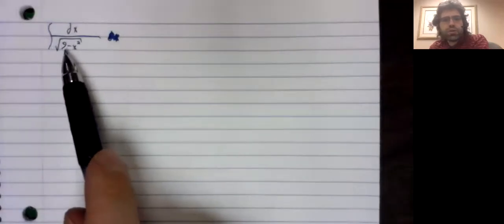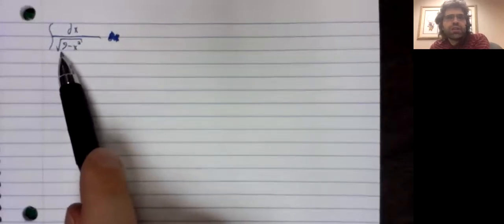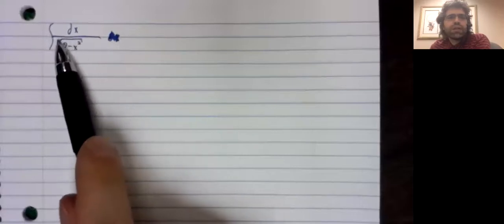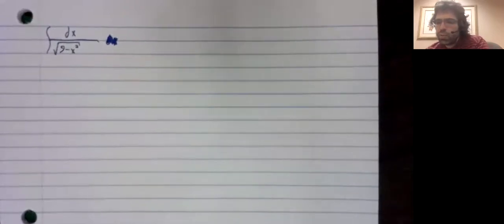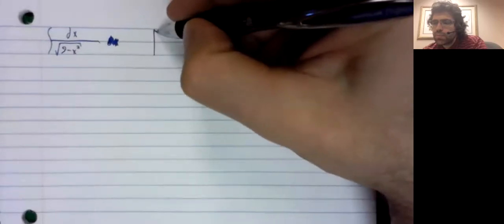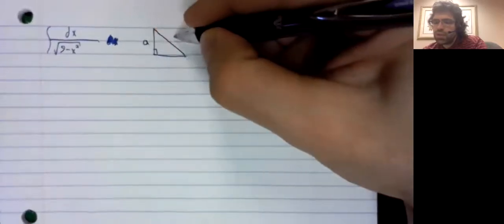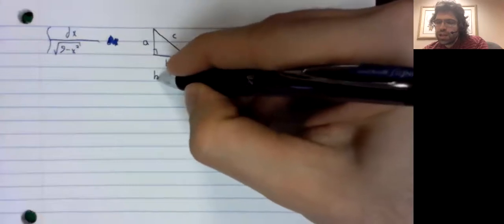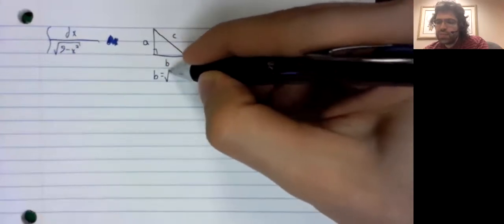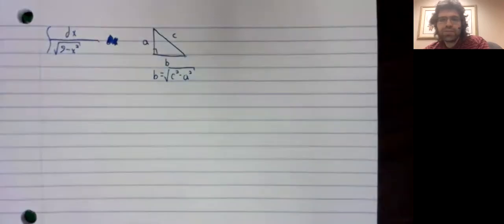In particular trigonometric substitution comes, at least in part, from the observation that this square root is something you might expect to see if you were using the Pythagorean theorem on a right triangle. If you have a right triangle and you label your sides A, C, and B, then the Pythagorean theorem says that B is the square root of C squared minus A squared.